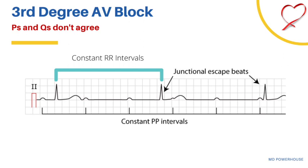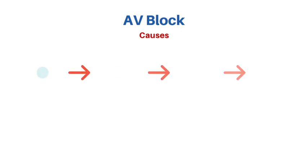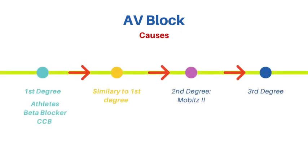What are the causes of AV blocks? For first degree AV blocks, causes include medications such as beta blockers and calcium channel blockers, and it can also be seen in athletes. If you see a clinical vignette with an asymptomatic athlete on routine checkup whose ECG shows a constant prolonged PR interval, no treatment is needed. Second degree AV block has similar causes. Other causes of AV blocks include Lyme disease and congenital AV blocks.